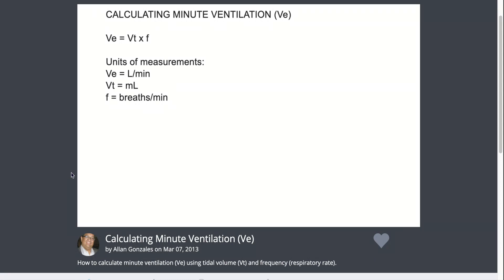But first, the unit of measurements for this equation is minute ventilation is in liters per minute, tidal volume is in milliliters, and frequency is breaths per minute. It's very important to know the conversion on how to change liters to milliliters, and vice versa, milliliters to liters.